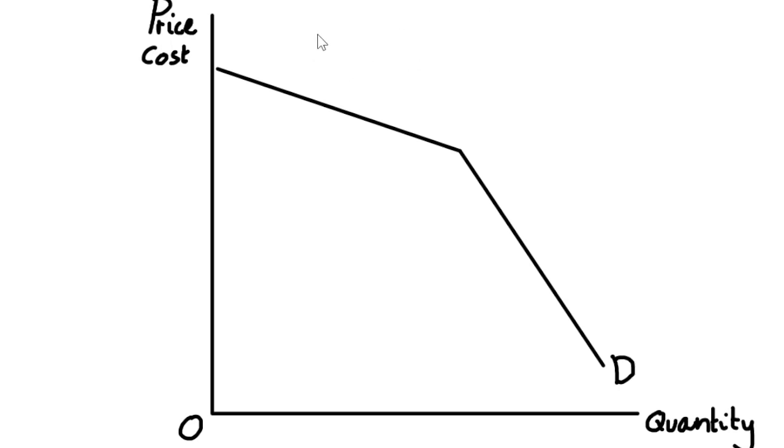As indicated in our previous video on the kinked demand curve, in this model what we have is a demand curve with two shapes to it. Up top here where it's relatively flat, this is the elastic part of our demand curve. And down here where it's relatively steep, we have the inelastic part of our demand curve. So this causes a kink in our demand curve, and we're going to indicate that point and draw a line straight down to our quantity axis.